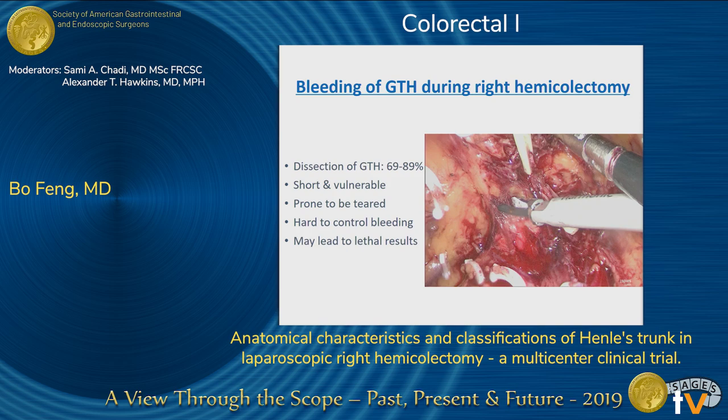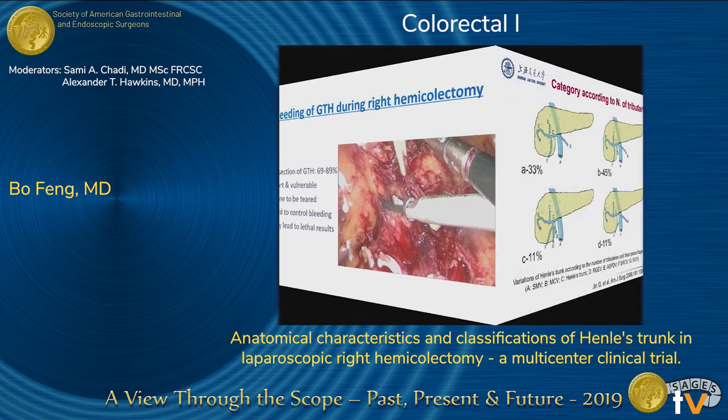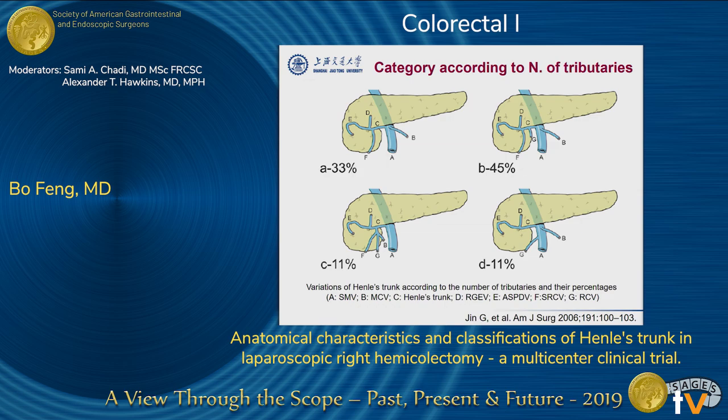In this transverse retrocolon space, the very key important structure is Henle's trunk. If we perform improper procedures, that might cause very severe disasters intraoperatively.